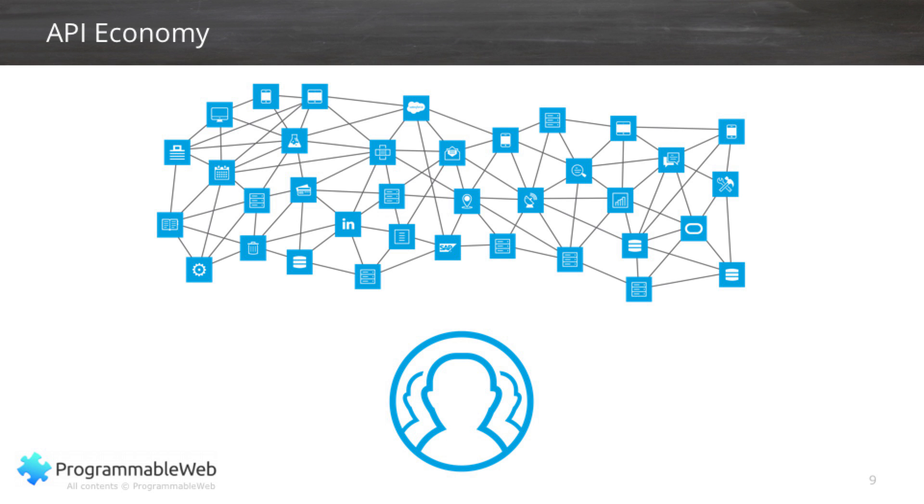This slide demonstrates the idea that you've got a bunch of services on a network, all interconnected to each other. The API economy consists of many more services than we're showing here. Because so many of these services are offered on relatively the same terms over the web, it starts to form a cohesive ecosystem that we refer to as the API economy.